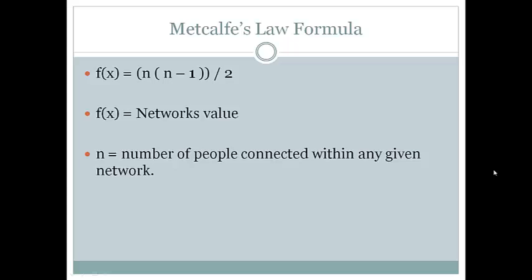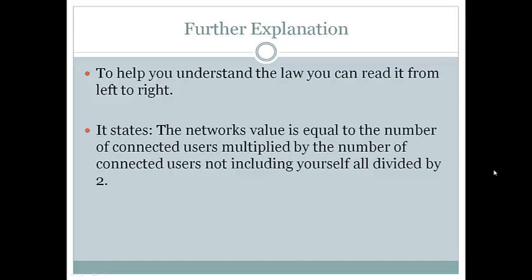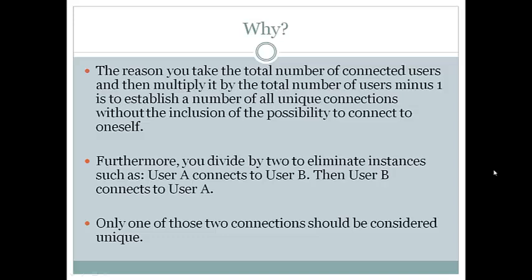The formula goes as follows. F(x) is the network's value. N is the number of people connected in any given network. To help you understand, if you're reading from left to right, the network value equals number of connected users multiplied by the number of connected users, not including oneself, divided by 2.